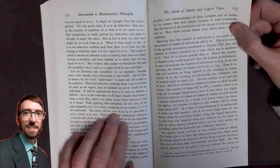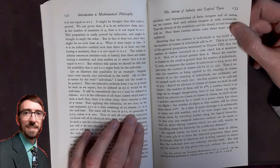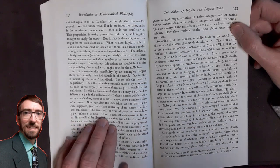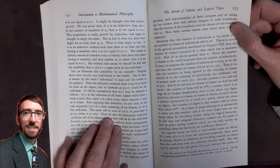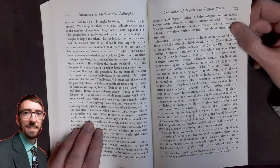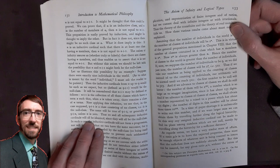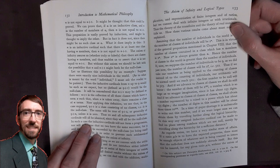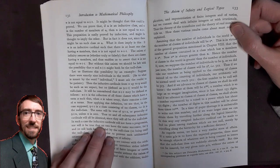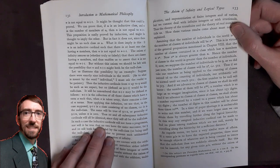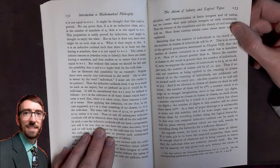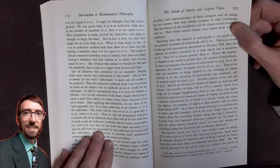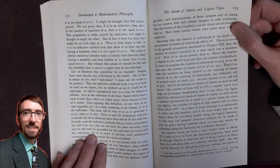The same will not be true of 9 plus 2, or generally of 9 plus n, unless n is 0. Thus, 10 and all subsequent inductive cardinals will all be identical, since they will all be the null class. In such a case, the inductive cardinals will not form a progression, nor will it be true that no two have the same successor, for 9 and 10 will both be succeeded by the null class, 10 being itself the null class.